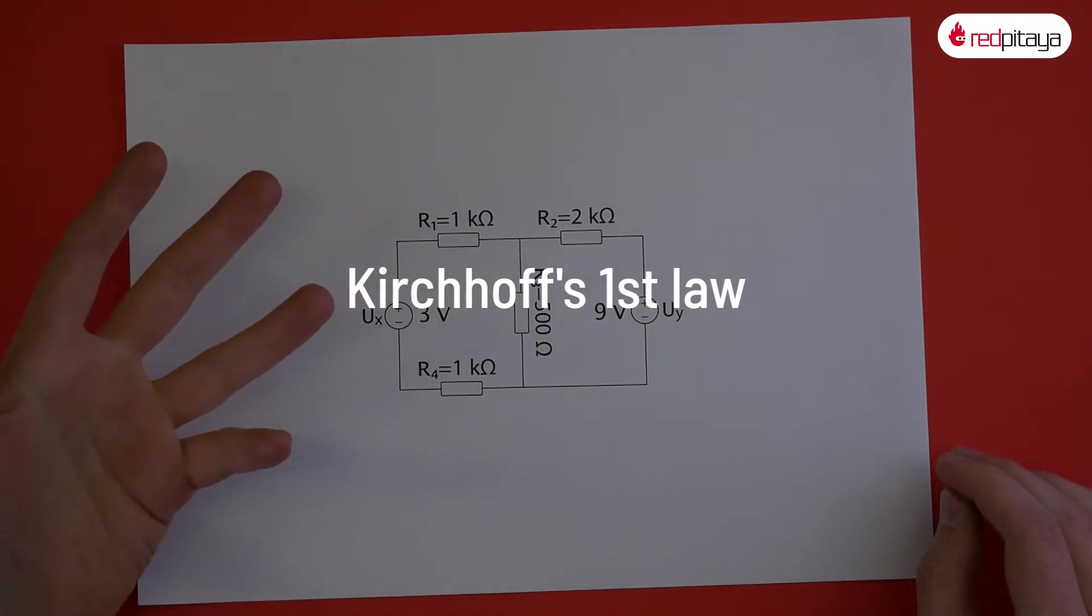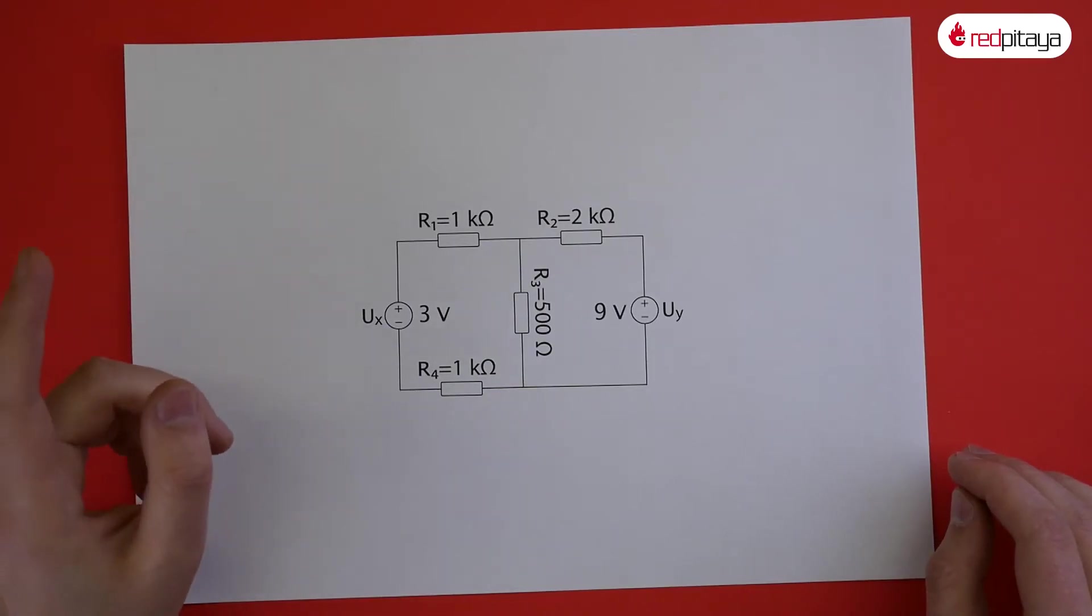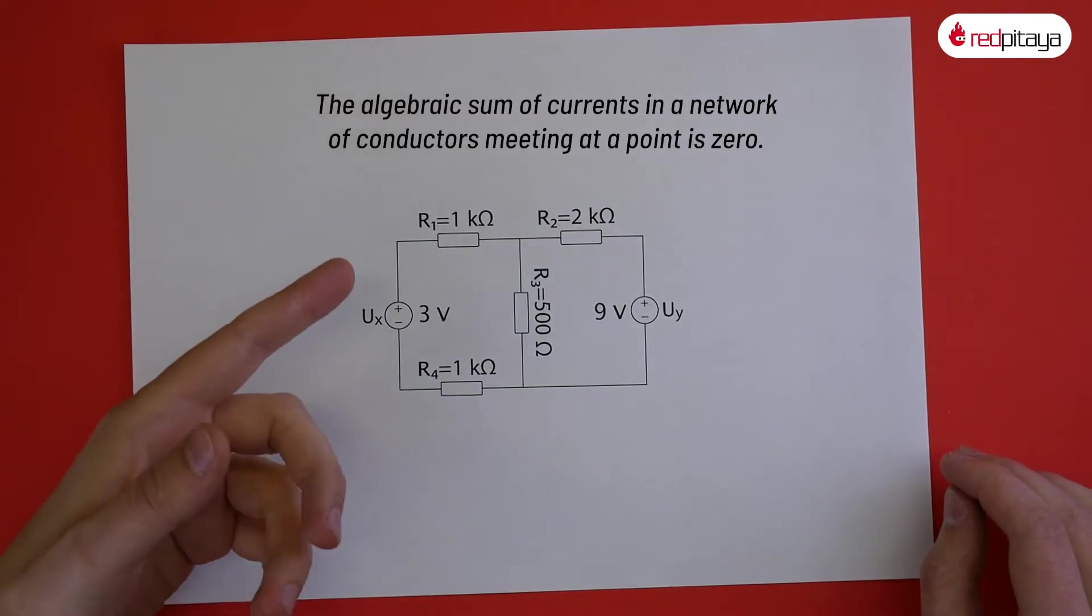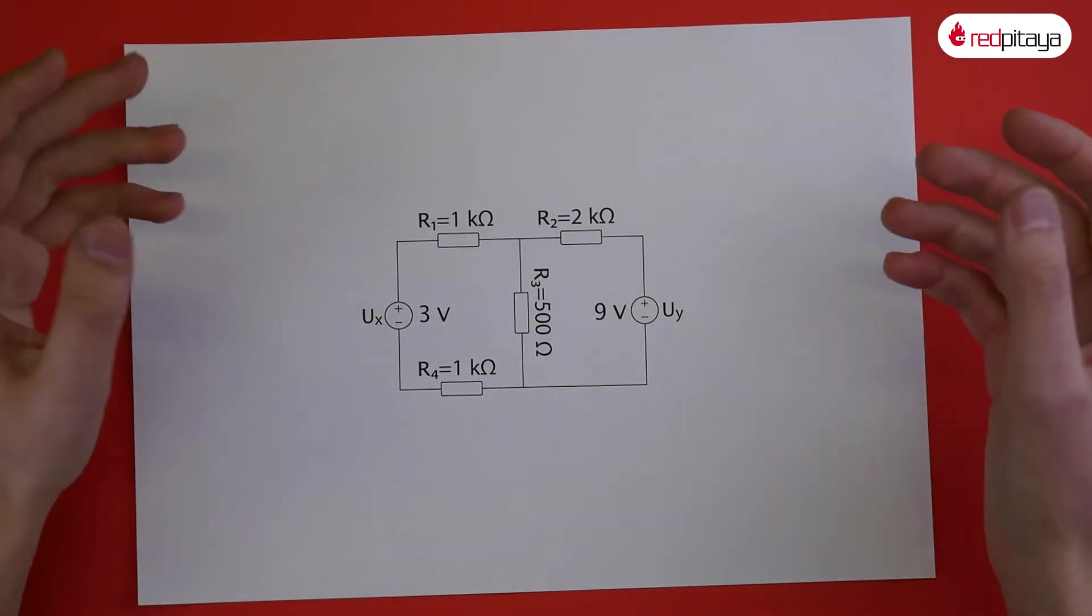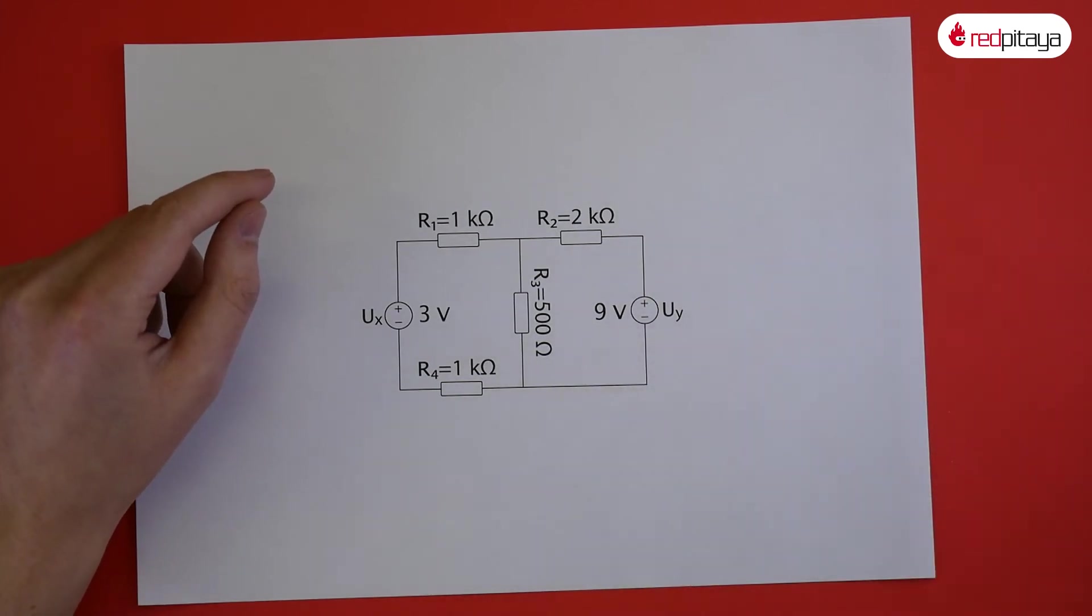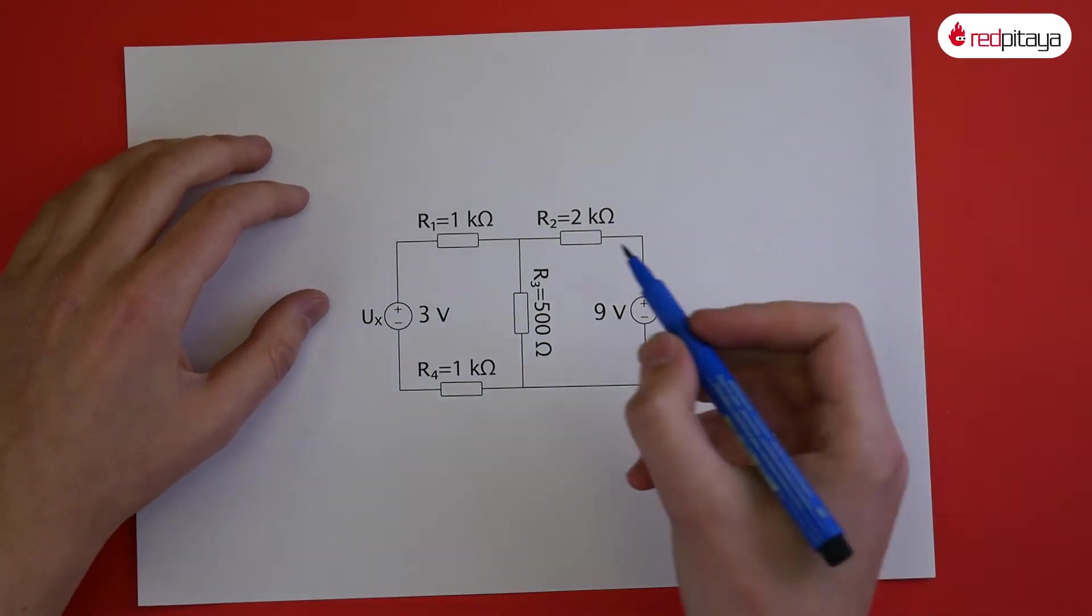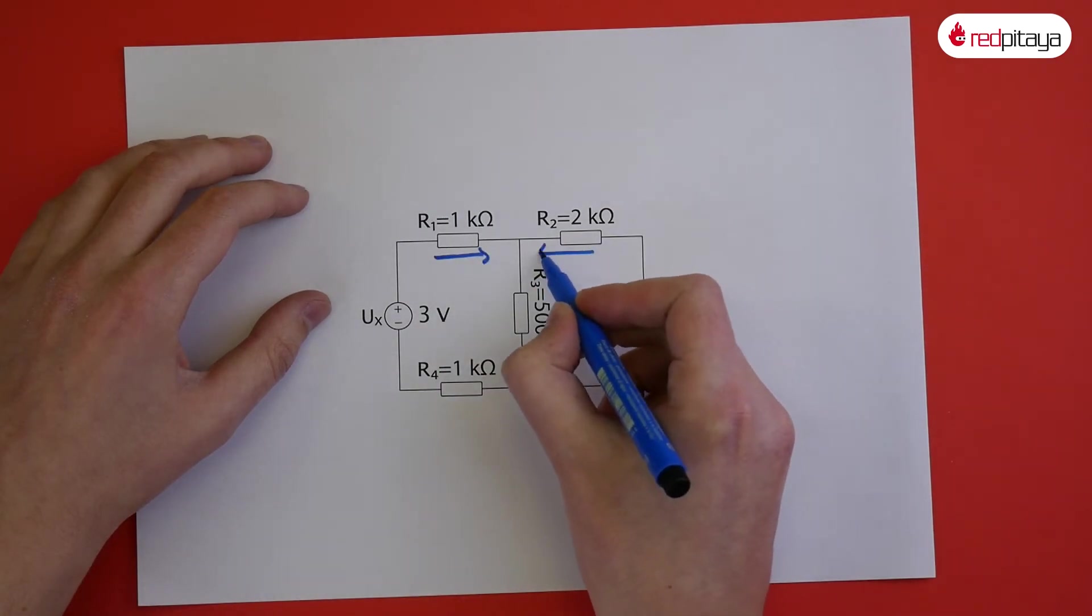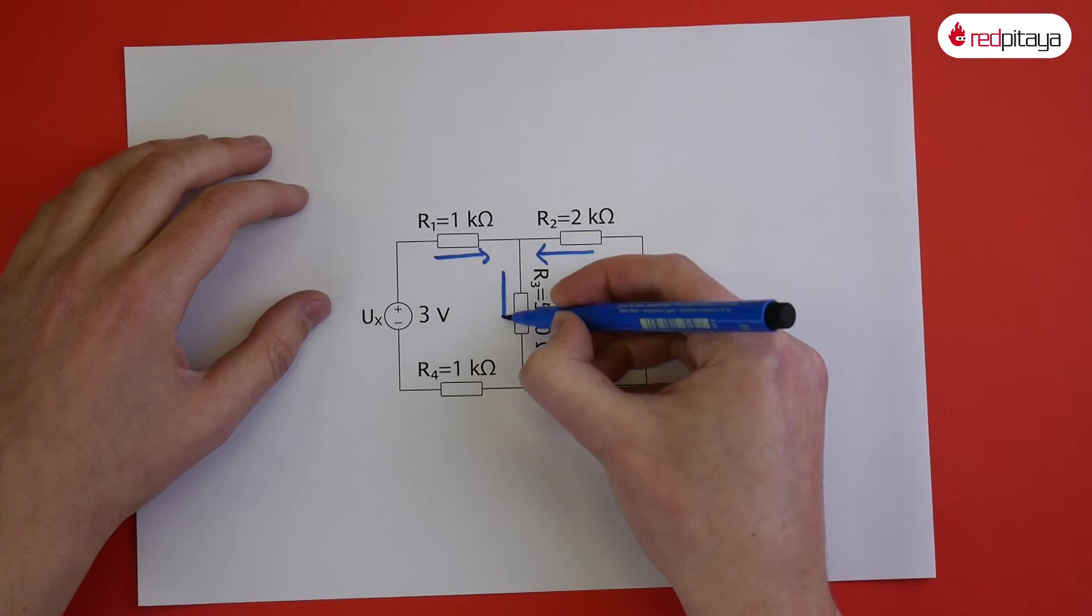His first law, also known as Kirchhoff's current law, states that the algebraic sum of currents in a network of conductors meeting at a point is zero. To put it simply, any current entering a node must also leave it. In practice, it means that this current plus this current equals this current.